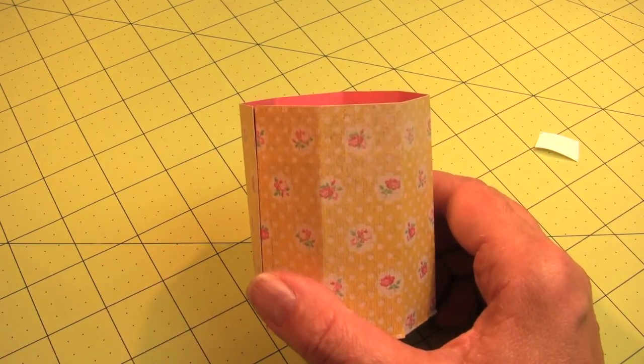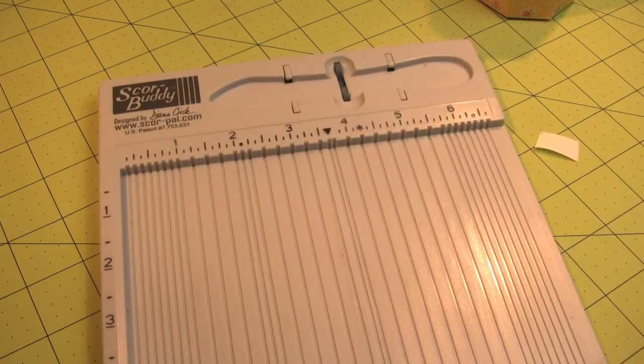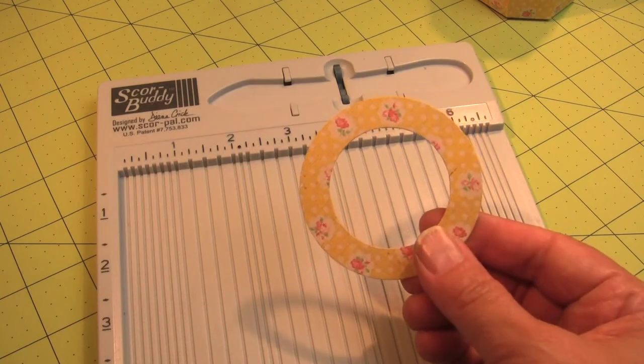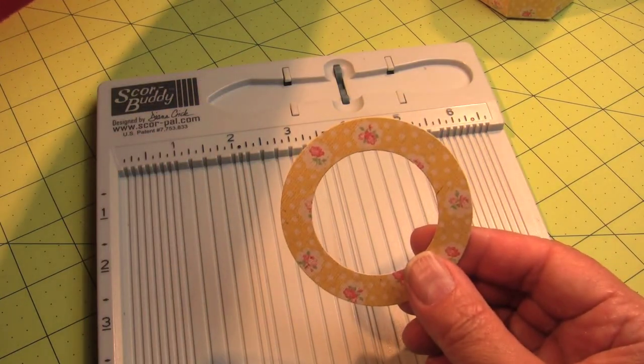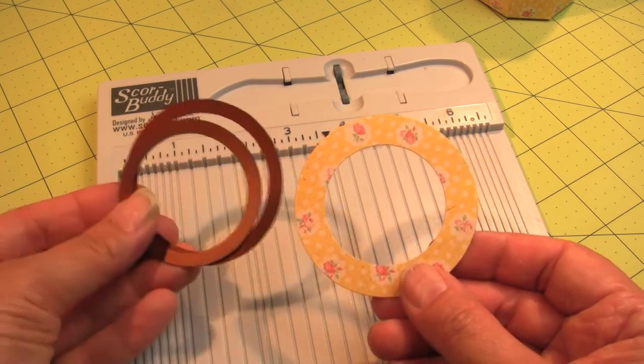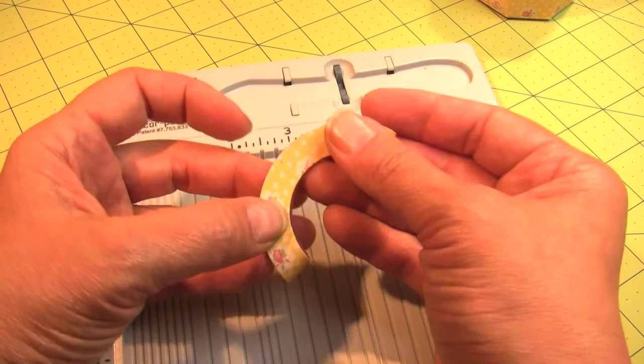Next, we need to do a handle for this. We're going to get the score buddy back out and I have a pre-cut piece of paper, also from the same piece of paper I made the mug from, and I used two Spellbinders dies to create it, ran them both through at the same time.